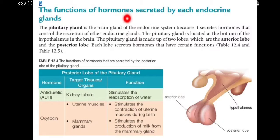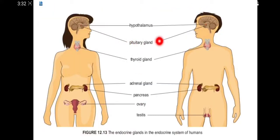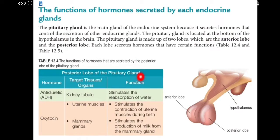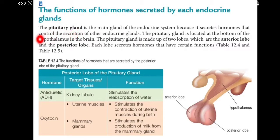The pituitary gland is the main gland of the endocrine system because it secretes hormones that control the secretions of other endocrine glands. The pituitary gland is located at the bottom of the hypothalamus in the brain.